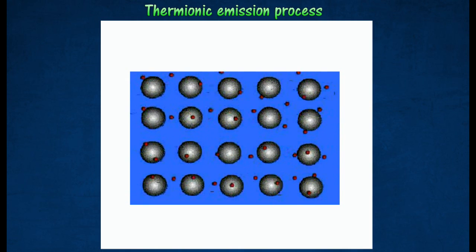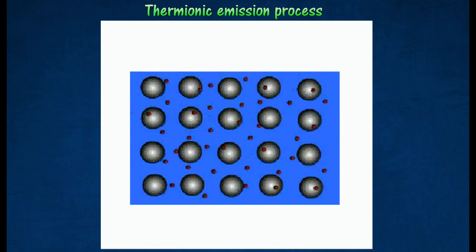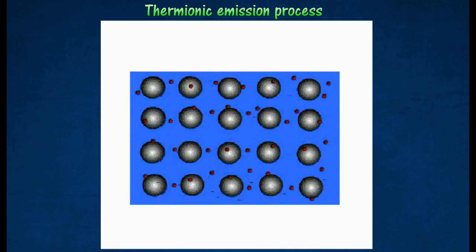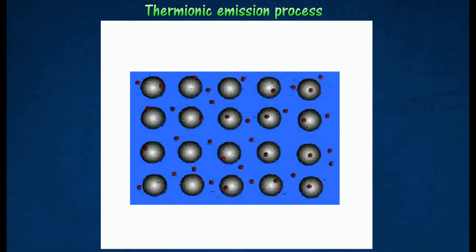The diagram shows the surface of a metal containing a large number of electrons which are free to move. The electrons cannot escape as they do not have enough kinetic energy to break free.